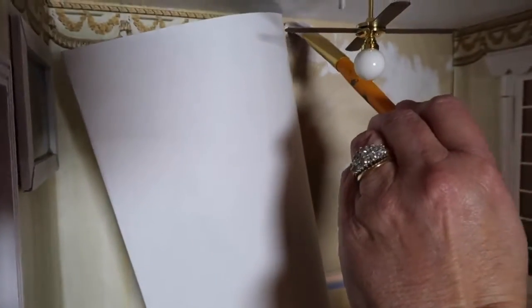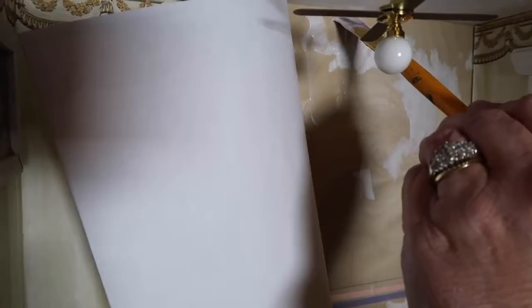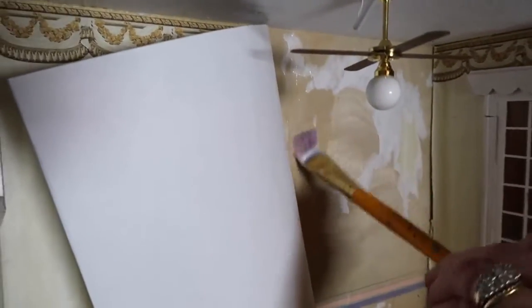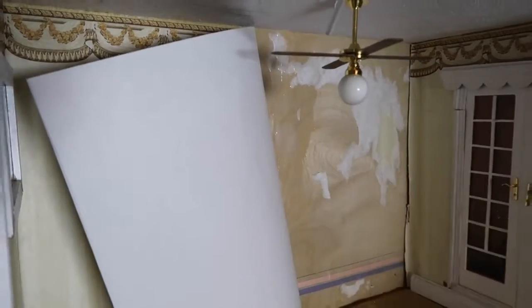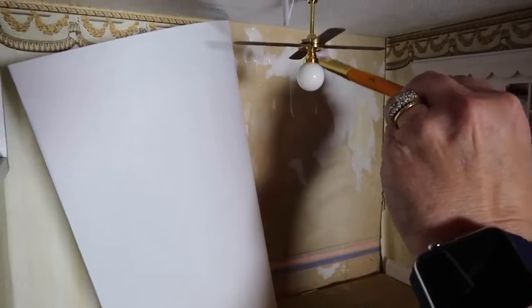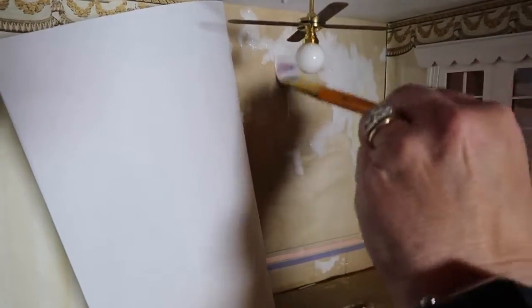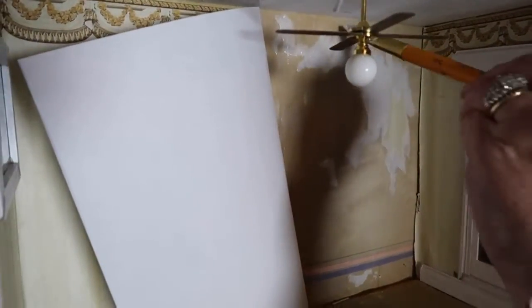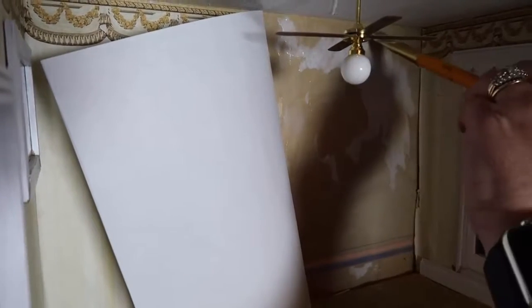Just using a regular paintbrush, and this is water soluble so you can wash the brush after and it works just fine. And it doesn't take a lot. In fact, if you use too much then you end up with soggy wallpaper and that's where you get the wrinkles. That's probably what happened before.